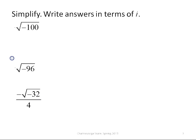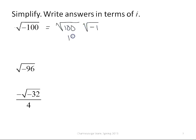Let's look at these examples. The square root of negative 100 — I can think of that as the square root of 100 times the square root of negative 1. So because 100 is a perfect square, this ends up being just 10i.